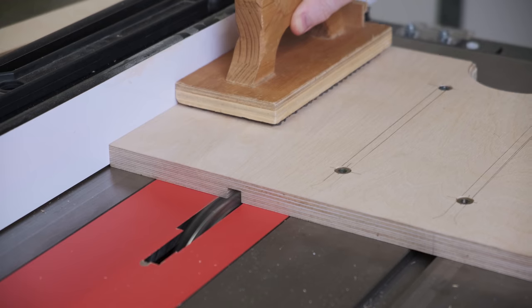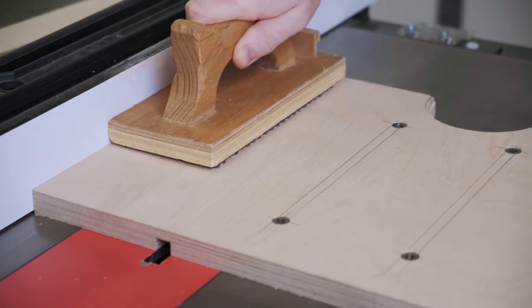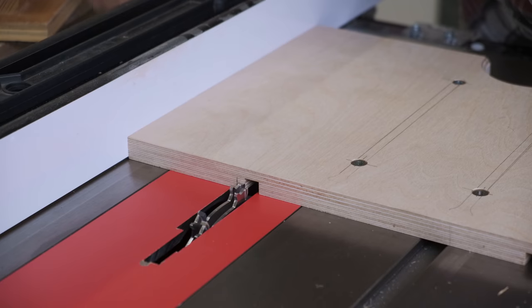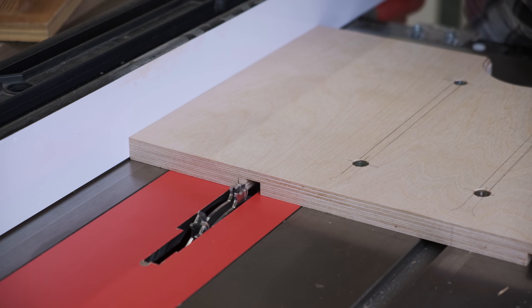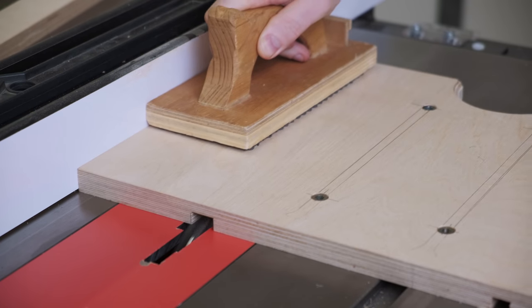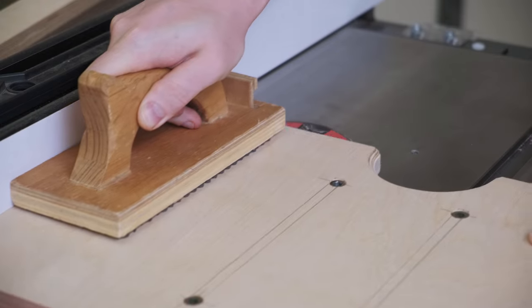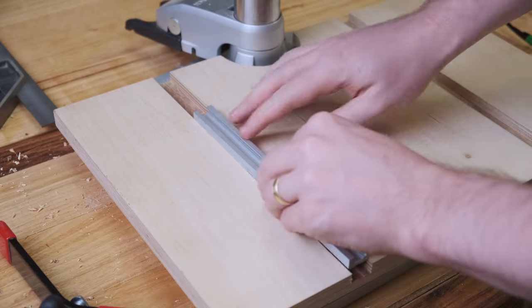To add in t-track for both hold downs and the fence a dado is needed. At the table saw or using a router table several passes get a very snug fit. The t-track should be flush with the table or even just slightly below.